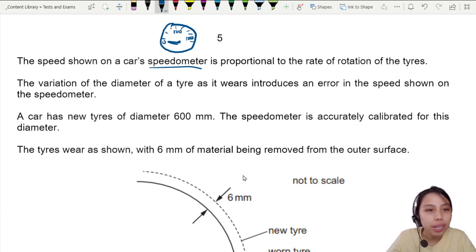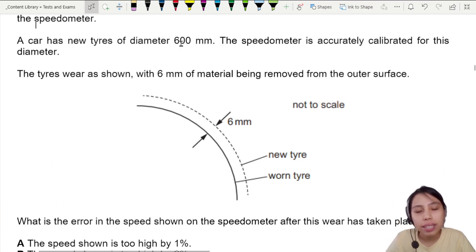Here you have a variation of diameter of a tire as it wears away, and then you start to have an error in the speed shown on the speedometer based on how fast the tire turns. A new car tire is 600mm and the speedometer is calibrated for this diameter. But over time the tire wears out and gets smaller. 6mm is removed from the outer surface. What's the error in speed shown on the speedometer after this wear has taken place? Let's break this down.